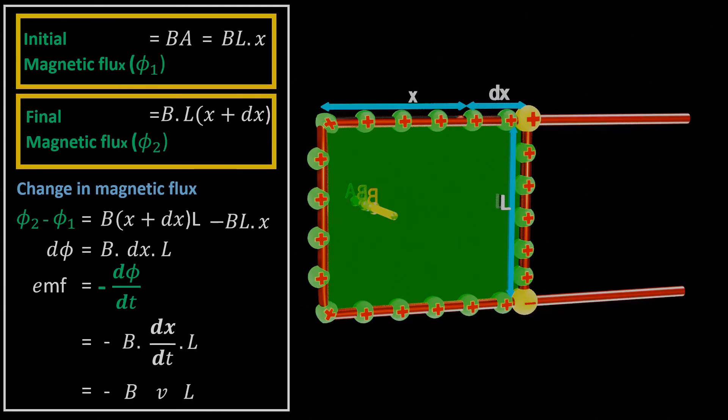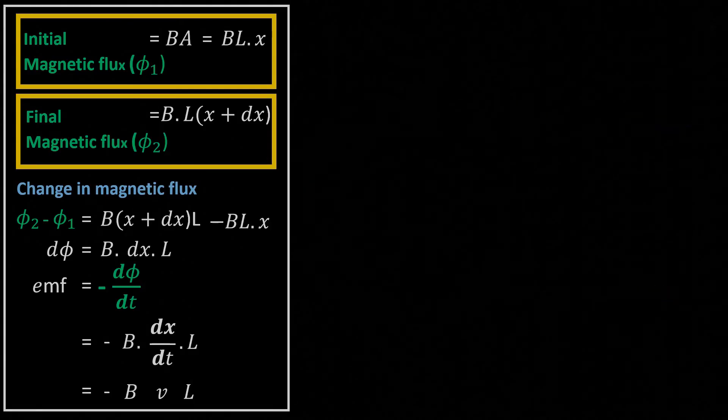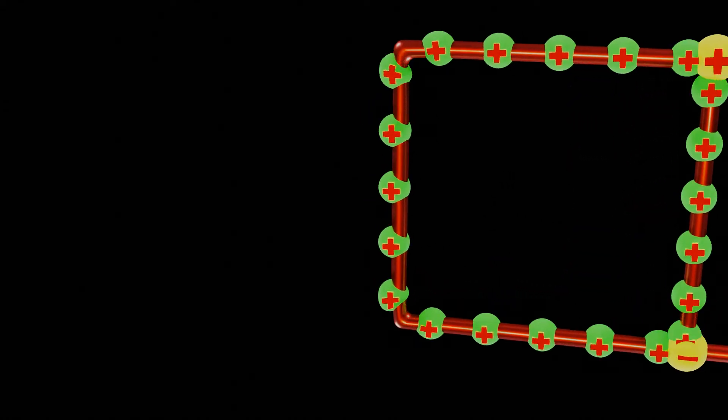Where EMF with a negative sign indicates that polarity of induced EMF will be in such a way so that it could flow charges in a manner to generate opposition force for the moving slider. But how? Let's try to understand.